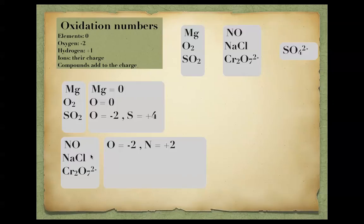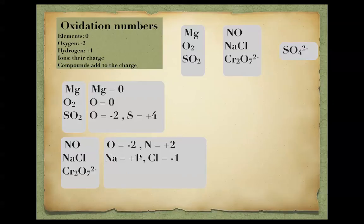For the dichromate ion (Cr₂O₇²⁻), Oxygen is -2; with seven Oxygens the total is -14. To reach the overall charge of -2, the Chromium total must be +12, meaning each Chromium is +6. A helpful method is to write the small numbers underneath each element as you calculate. For Sulfate (SO₄²⁻), Oxygen is -2 giving -8 total; to reach -2 the Sulfur must be +6.